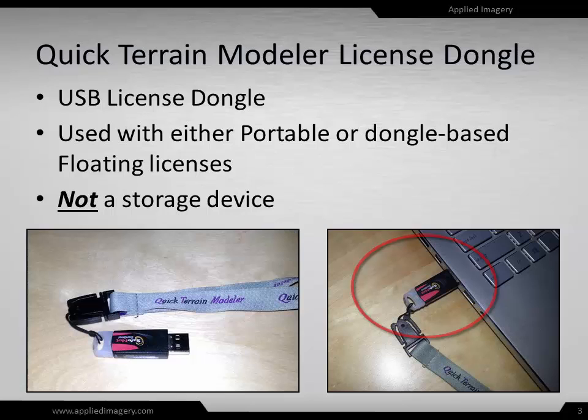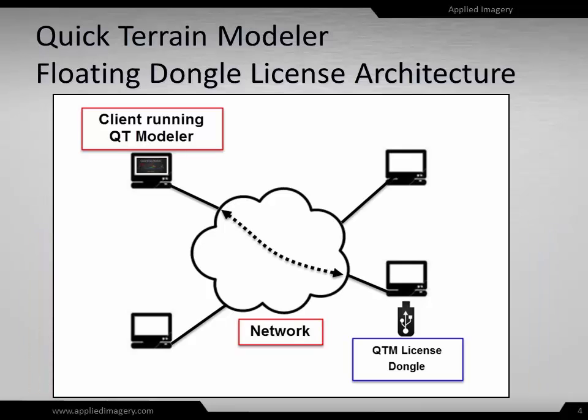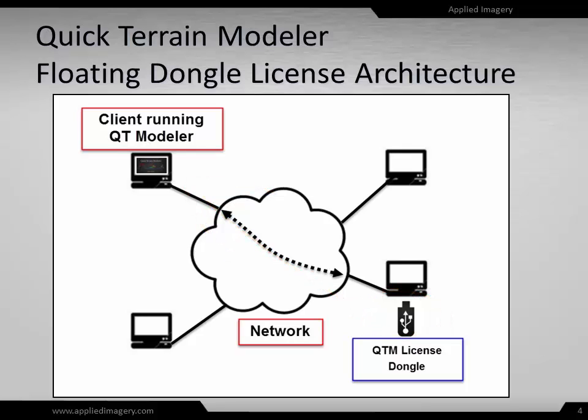For dongle-based floating licenses, the license dongle can be installed on any workstation on the network. When used in a floating configuration, Quick Terrain Modeler will discover available license dongles across the network. This license will be unavailable to the rest of the network until the user closes Quick Terrain Modeler. There can be multiple license dongles floating on a network at the same time.